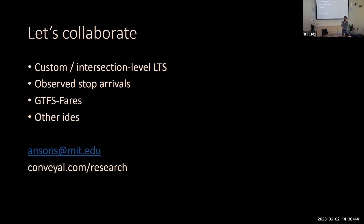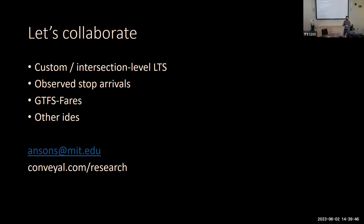On whether R5 can incorporate SACOG's model — including their activity-based model and 2030 projections of land use, population densities, and job density: on the land use side, yes, that is work we're doing. You can bring in projected land use and jobs data as a layer and run the accessibility calculations against those future projections.